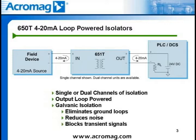Location is also not an issue in this application. Since the output from the isolated transmitter and the power source share the same two wires, these modules can be placed anywhere between the field device and the PLC. Since both the input and output signal to the isolated transmitter are 4 to 20 milliamps DC, location of the device is not critical.